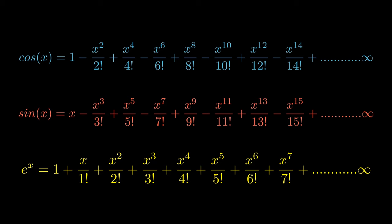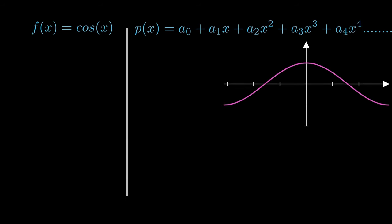Let's take the example of the cosine function to understand this. We want a duplicate polynomial version of cos x, say p of x. Our motive is to find coefficients that make p of x exactly look like cosine of x.